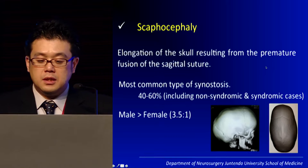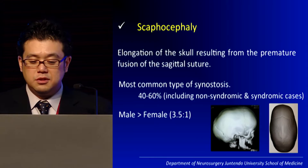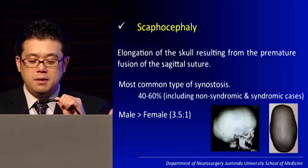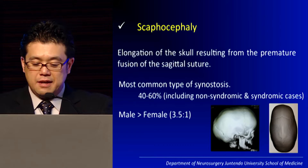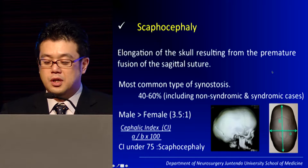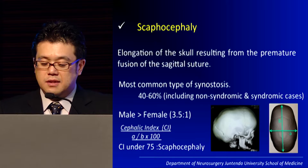Scaphocephaly is an elongation of the skull resulting from the premature fusion of the sagittal suture, as we all know. It is the most common type of synostosis, accounting for 40 to 60 percent including non-syndromal and syndromal cases. They have a slight male predominance. The fused sagittal synostosis suture is well defined by the cephalic index, and a cephalic index under 75 is defined as scaphocephaly.